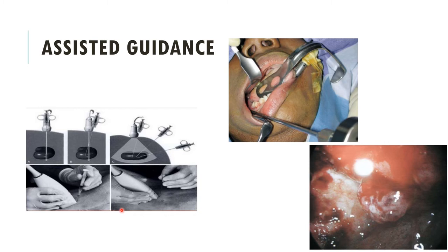Ultrasound-guided biopsy advantage: the needle can be visualized in the organ and the organ is scanned after the biopsy for possible complications. Unlike other radiographic biopsy procedures, ionizing radiation is not used. However, ultrasound-guided biopsy is not possible when gas or bone prevents visualization of the biopsy region. CT-guided biopsy uses real-time CT images to guide the needle to the lesion. Occasionally, IV contrast is needed to help identify and target the lesion prior to biopsy.